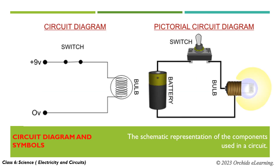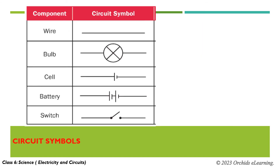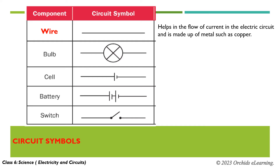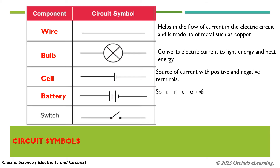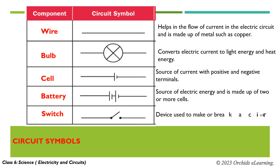A circuit diagram represents a schematic representation of the components used in a circuit. Various symbols are used for each component. A connection wire helps in the flow of current and is made up of metals such as copper. A bulb converts electric current to light energy and heat energy. A cell is the source of current with positive and negative terminals. A battery is a source of electric energy made up of two or more cells. A switch is a device used to make or break a circuit.